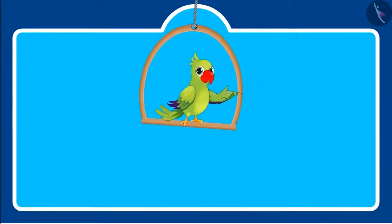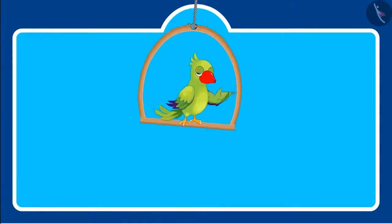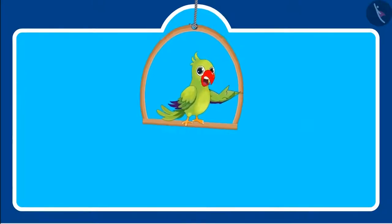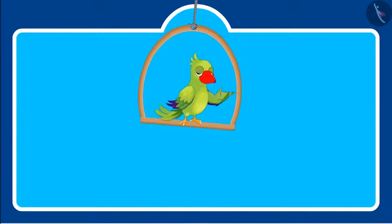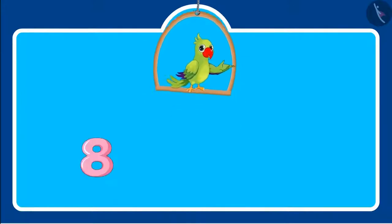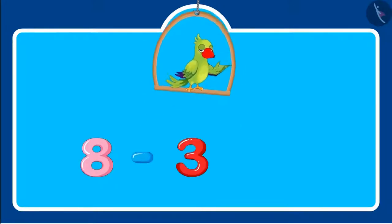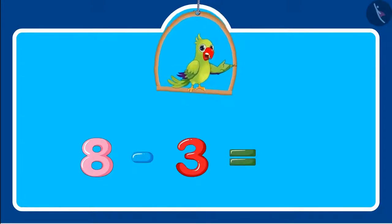Can you write this in a systematic way? This is how we will write it in a systematic way: eight minus three equals five.